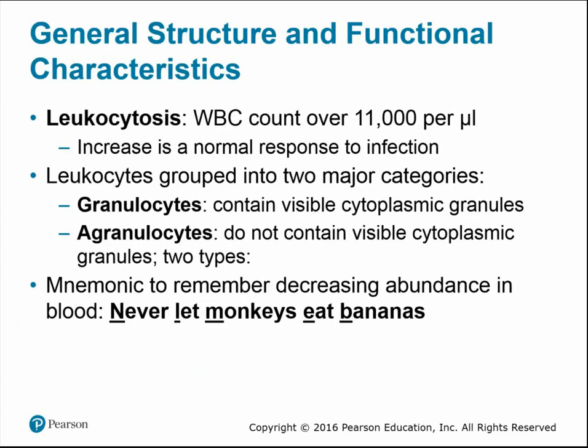Leukocytosis is a white blood cell count over 11,000 per microliter — a normal response to infection requiring more white blood cells to fight it off. Leukocytes are grouped into two major categories based on whether they have visible cytoplasmic granules: granulocytes have visible granules, agranulocytes do not. A mnemonic for remembering white blood cells from most to least abundant is: Never Let Monkeys Eat Bananas — neutrophils, lymphocytes, monocytes, eosinophils, basophils.